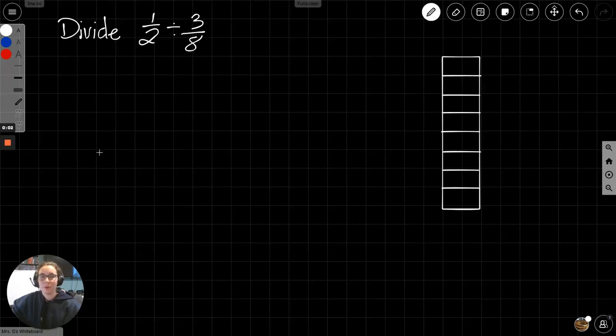This is example four of lesson 5.4, dividing fractions. We're dividing 1 half divided by 3 eighths. How many chunks of 3 eighths can I take out of 1 half? We'll get to the model at the end, but first let's look at this.